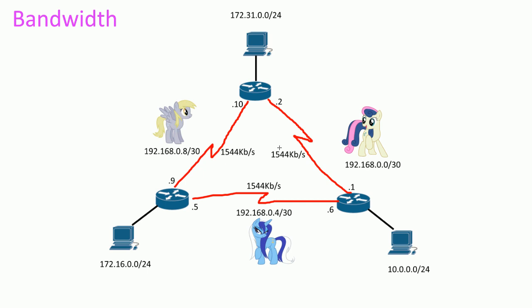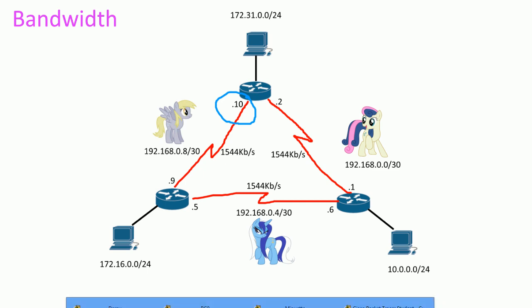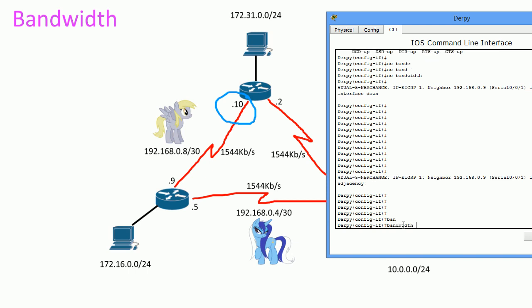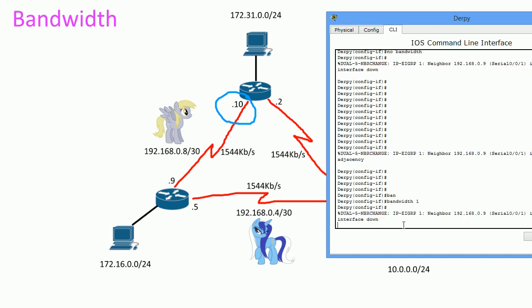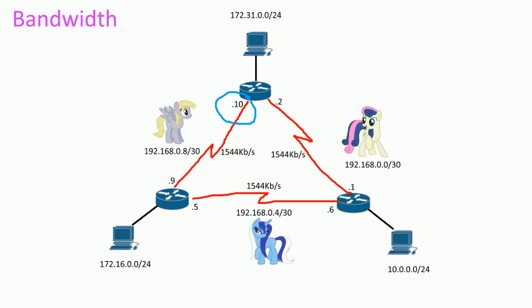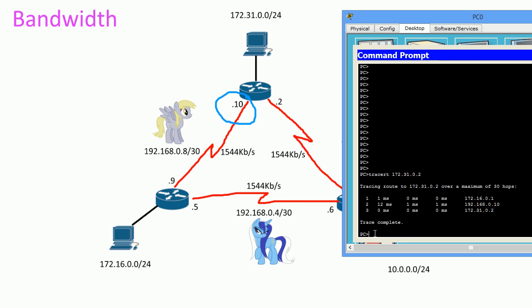Now let's change the bandwidth on this interface to one kilobit and see what happens — we're going to break the network. Let's set the bandwidth on this interface to one kilobit and then run a traceroute again to see what happened.